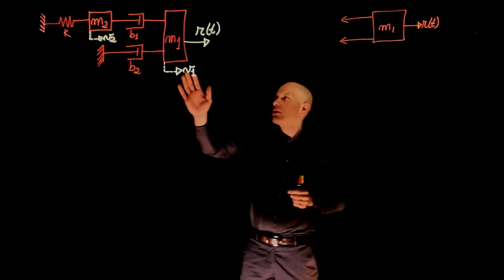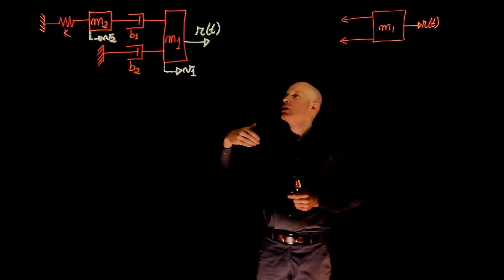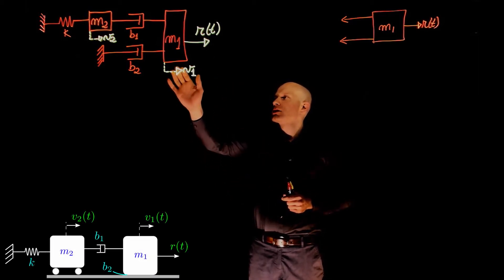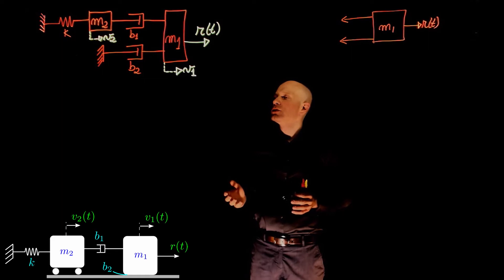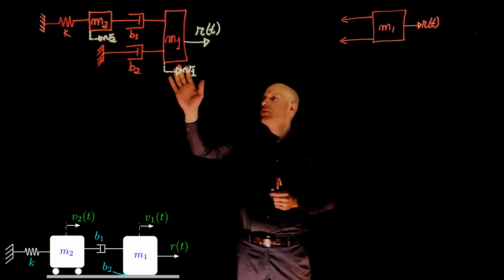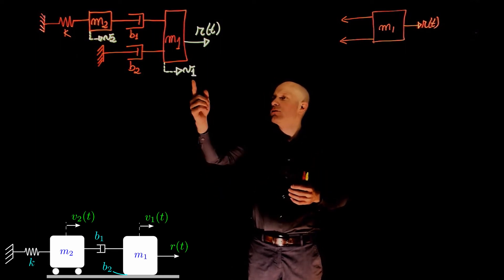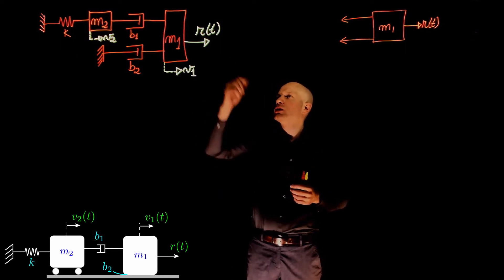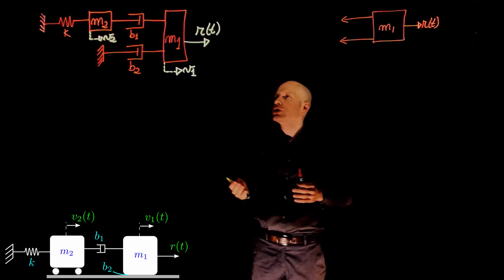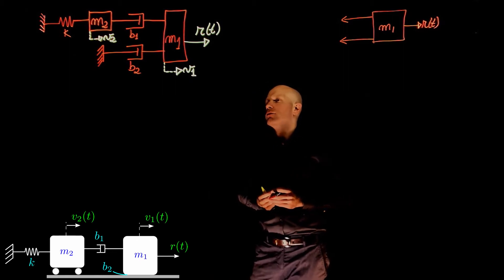In this example we have a system of two masses, two dampers and one spring. The input to the system is a force r that is being applied to mass m1, and the output of the system is v1, that is the speed of mass m1. We are interested in the response of the system v1 when a force r is applied — in other words, the transfer function between r and v1.